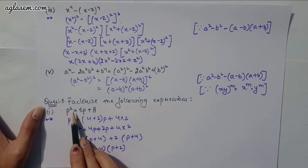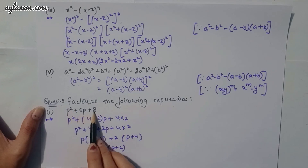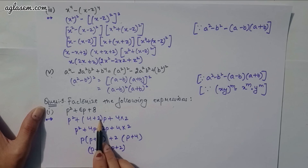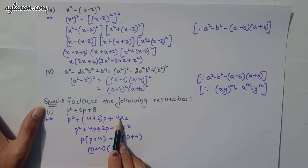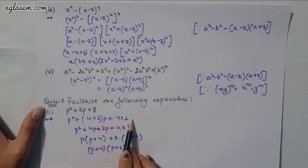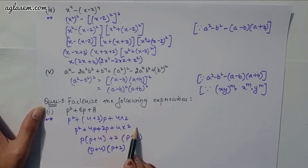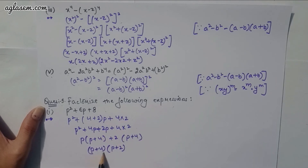Moving to the fifth and last question — factorize. First part: p² + 6p + 8. Split middle term: p² + 4p + 2p + 8 = p(p + 4) + 2(p + 4) = (p + 4)(p + 2).